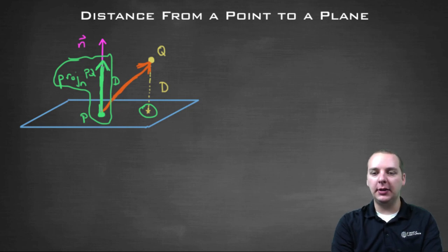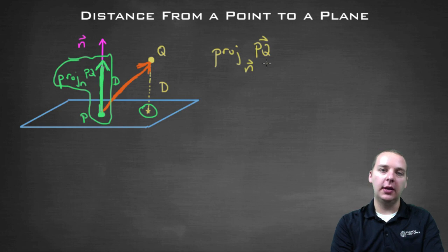Alright, so let's see how the math plays out. Let's see what we can do here. Alright, so first of all, what are we trying to do? Well, we're trying to find the projection, the projection of PQ onto vector N. That's what I want to do. Find PQ, and then project it onto vector N.